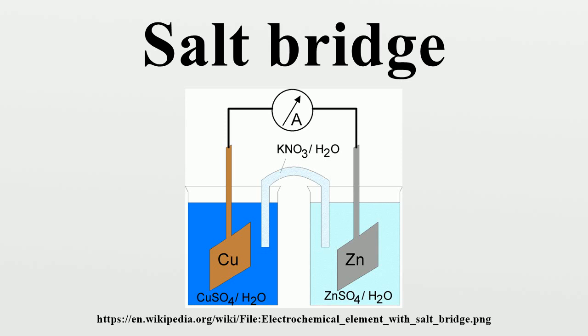The electrolyte is often jellified with agar-agar to help prevent the intermixing of fluids which might otherwise occur. The conductivity of a glass tube bridge depends mostly on the concentration of the electrolyte's solution.